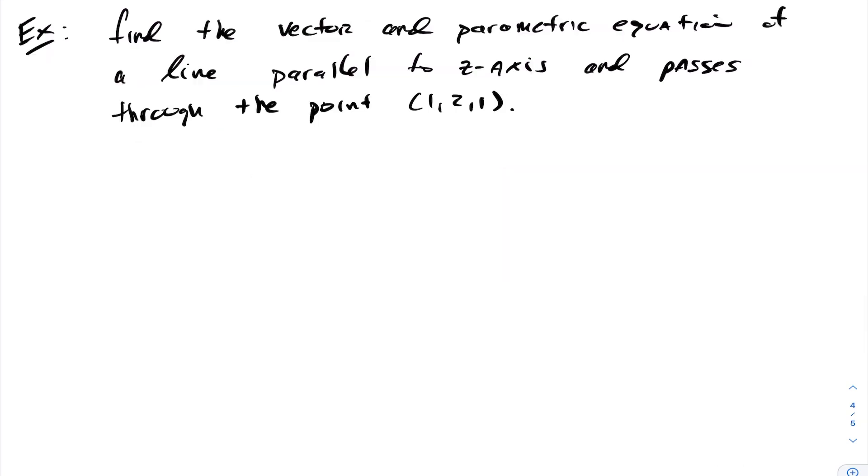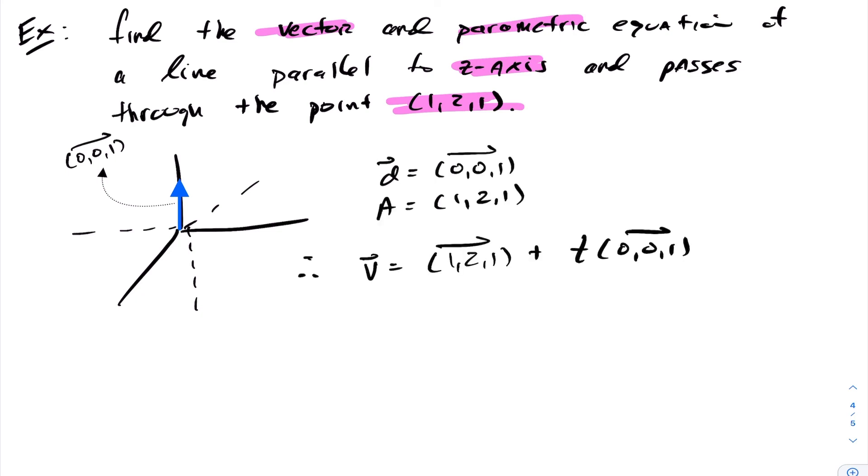So for this question here we want to find the vector and parametric equation of a line that's parallel to the z-axis and passes through the following point. Notice that my line is parallel to the z-axis, we can use the same direction vector that exists on the z-axis, so in this case (0,0,1). So therefore we have a direction vector and a point, and therefore the vector equation would be v equals (1,2,1) plus any scalar multiple of vector (0,0,1).